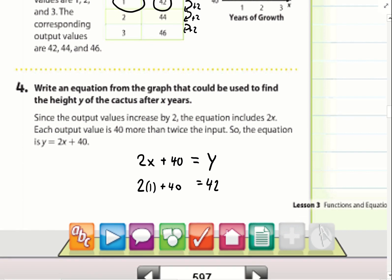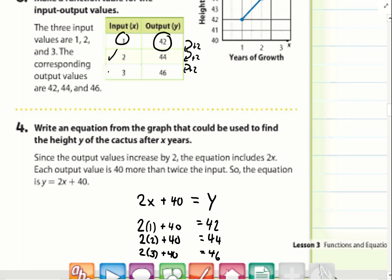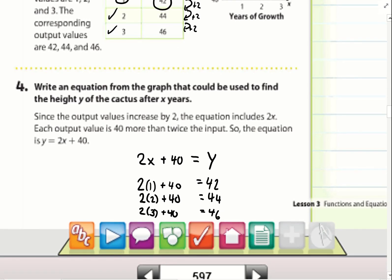Now I'm going to test it out with my other numbers. When x equals 2, it says y is supposed to equal 44. 2 times 2 is 4, plus 40 is 44. And if x equals 3, 2 times 3 is 6, 6 plus 40 is 46. These are all true. So that means my equation works.